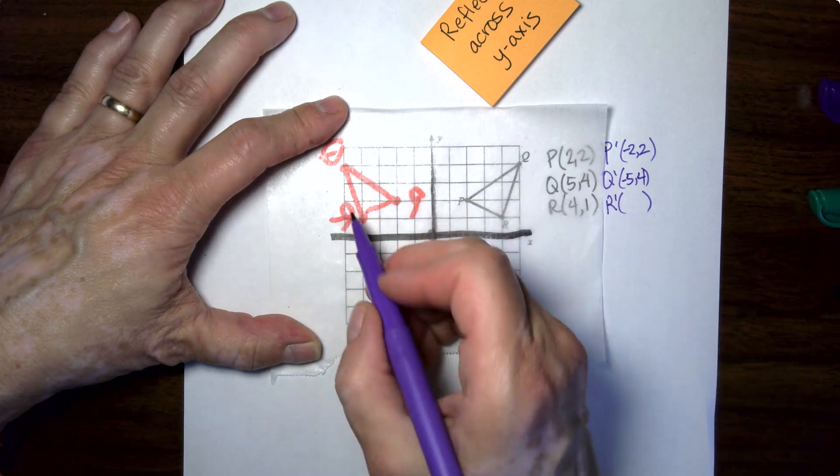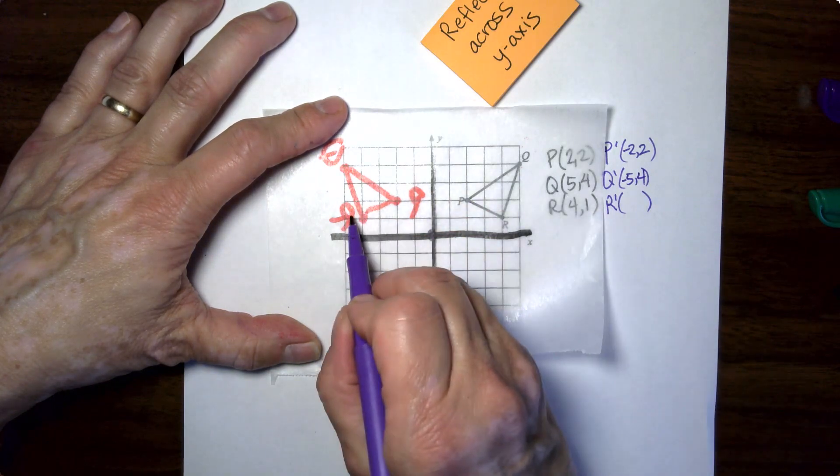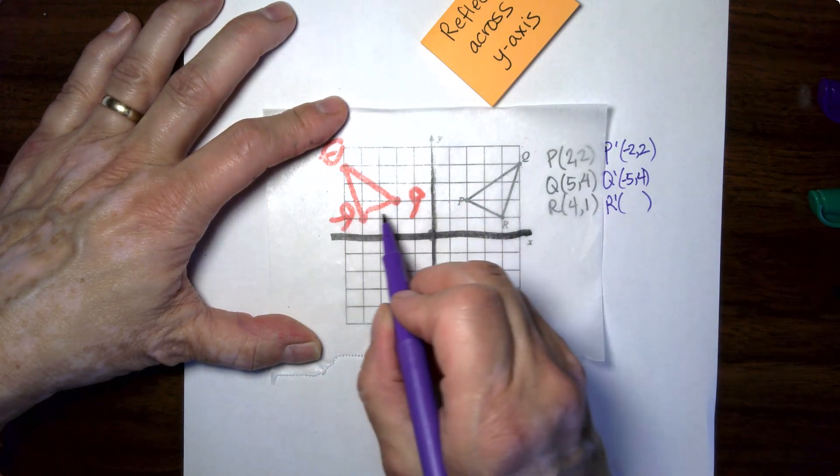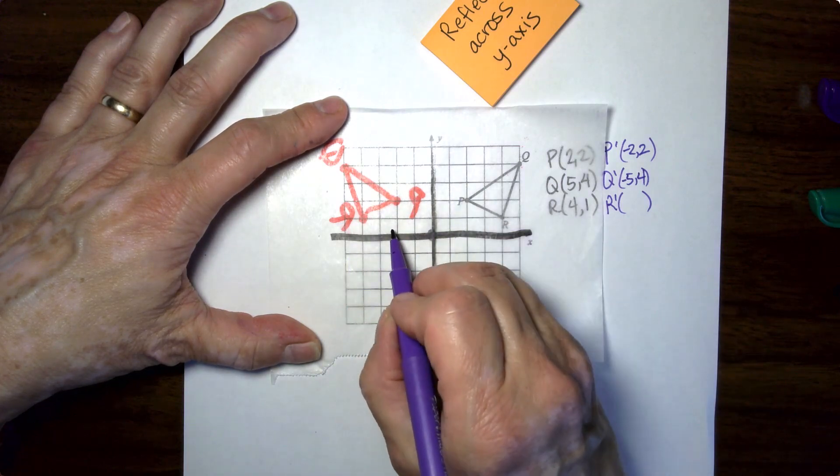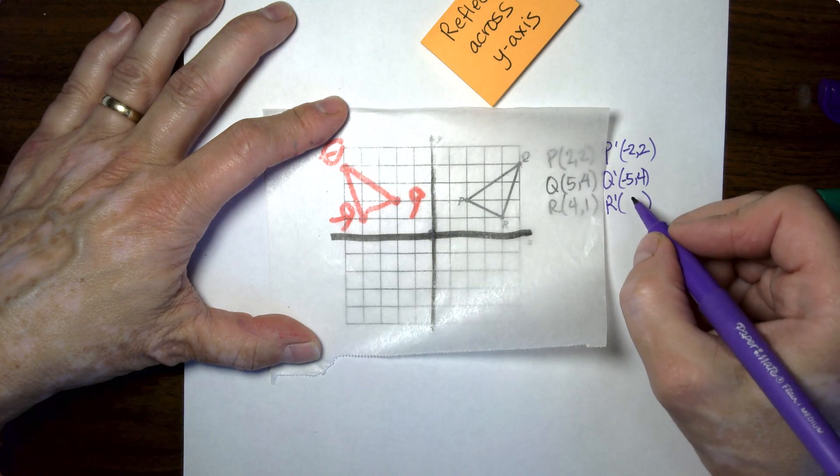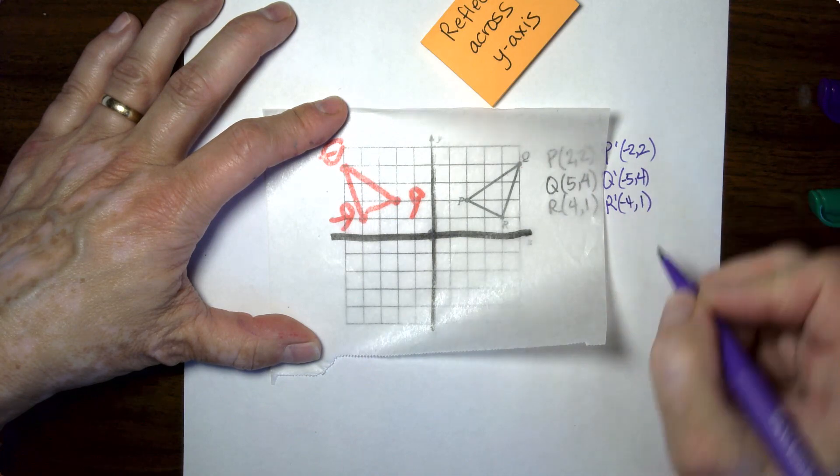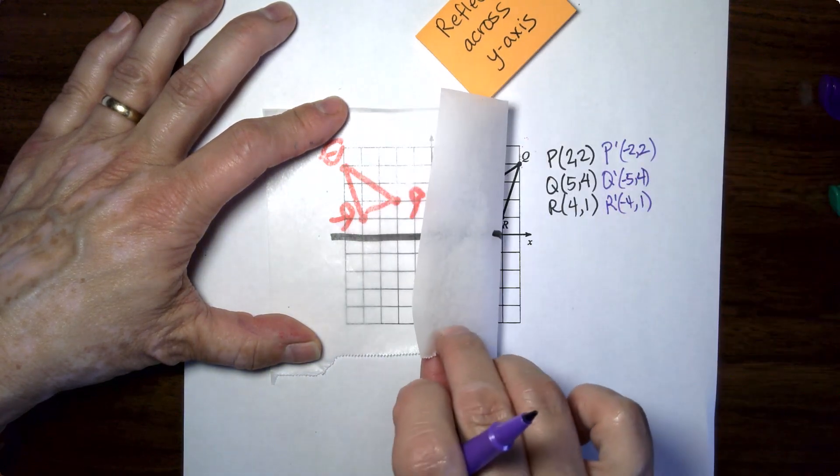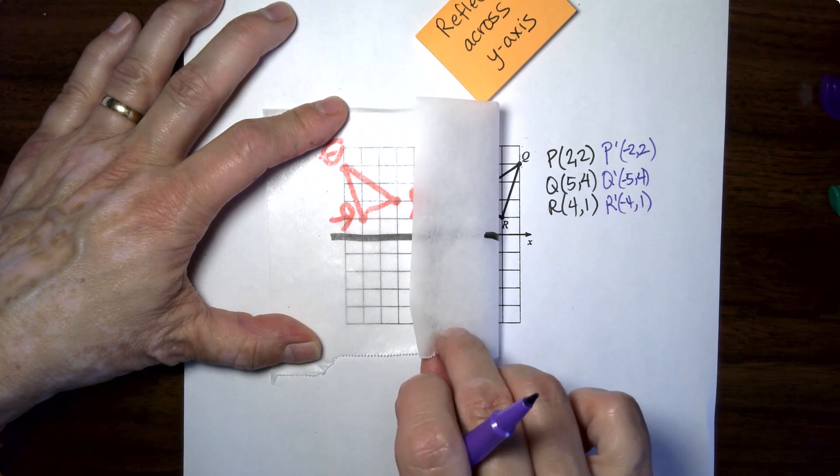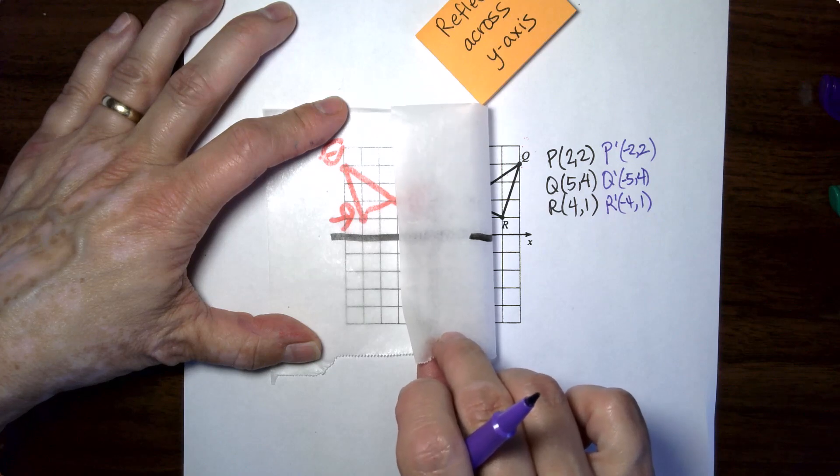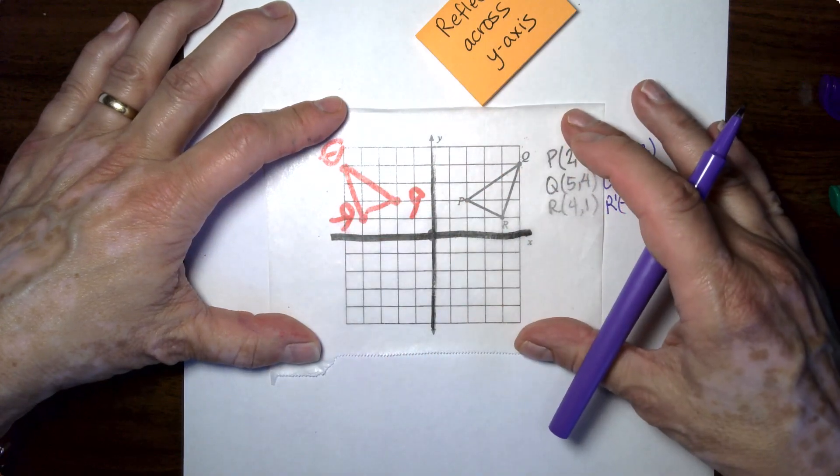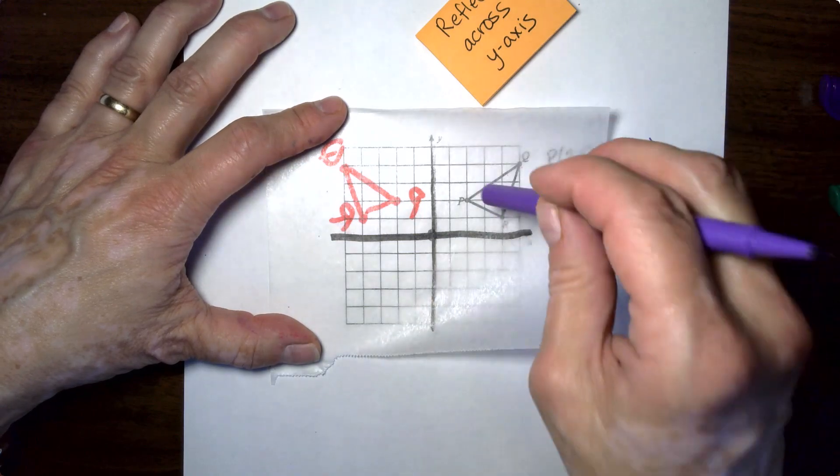And the new R is just reflected across. So the height of it doesn't change. That's the Y value, but the X changes to one, two, three, four. So it's negative four, positive one. And if you look at the points, you can see the algebra shortcut for that is actually pretty easy. If you get it, it's hard to understand what's happening though, unless you have a visual and this is the visual.